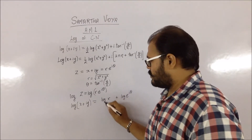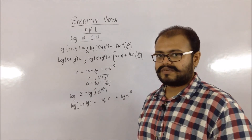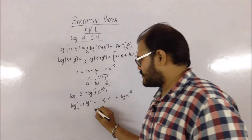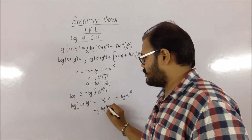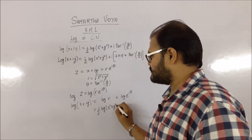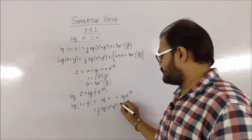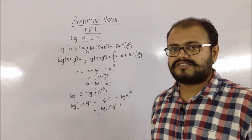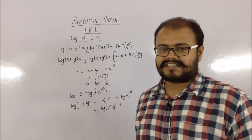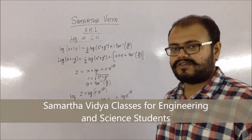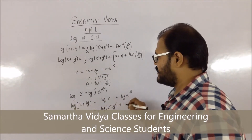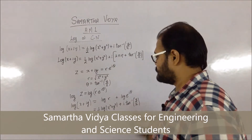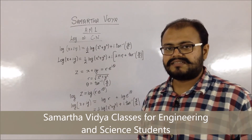Now, log(r) — since r = √(x² + y²) = (x² + y²)^(1/2) — becomes (1/2)·log(x² + y²). Then, since log(e^(iθ)) = iθ·log(e), and since we are taking the natural log, log(e) = 1, this simplifies to just iθ, which is i·tan⁻¹(y/x). This gives us the principal value.